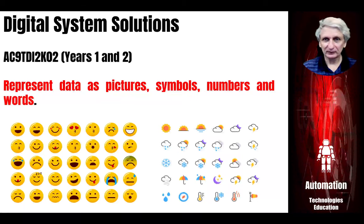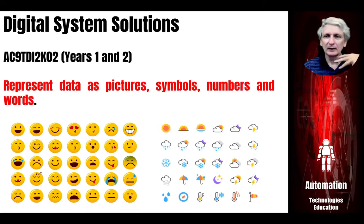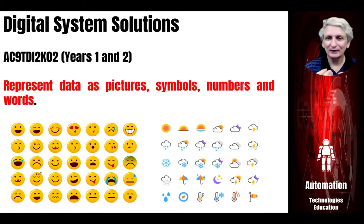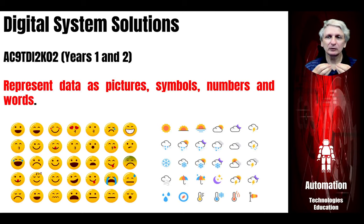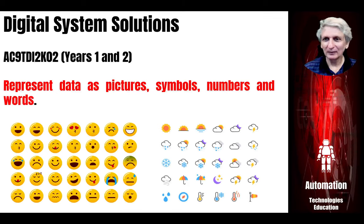Another aspect of digital solutions is the ways we represent data in different forms — through pictures, symbols, numbers, and words. Emoticons can represent different images that tell a particular story, as can weather images. There are a whole range of different ways to communicate ideas using symbols, numbers, pictures, and words. We have different languages and different number systems — the Roman numeral system versus the Arabic numeral system.